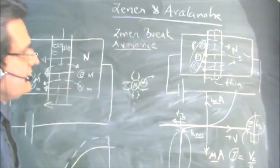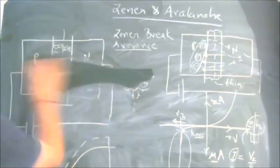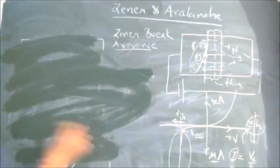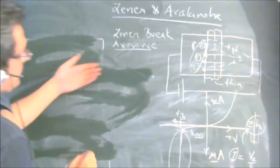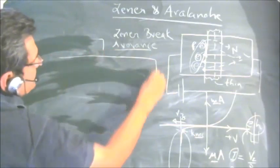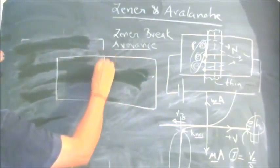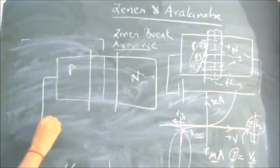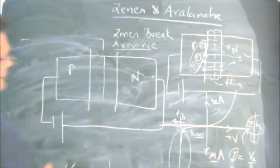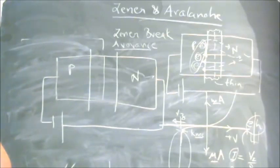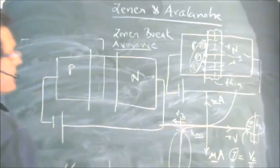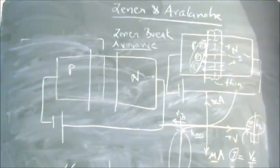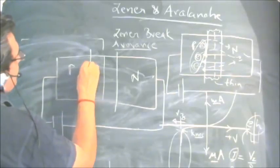This is the zener breakdown. In the avalanche breakdown, something similar happens but the process by which minority carriers cross the junction is different. In avalanche breakdown there is also a sharp rise in current beyond a certain voltage, but the process is quite different.